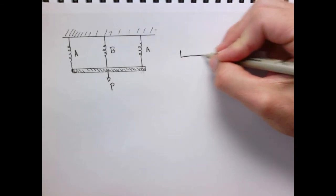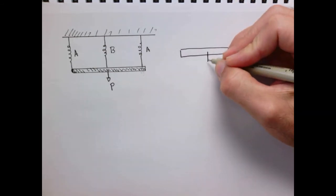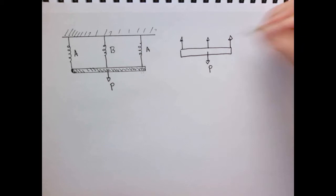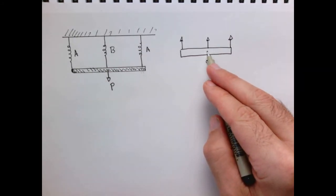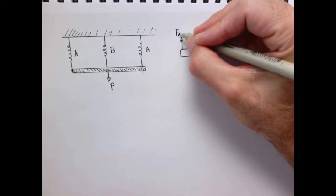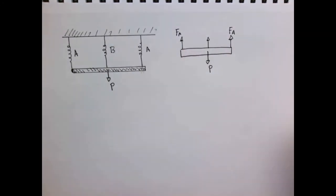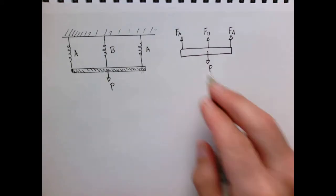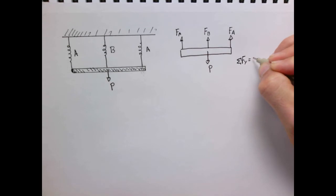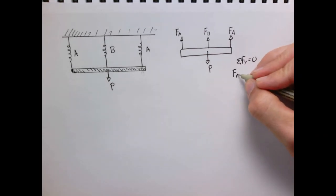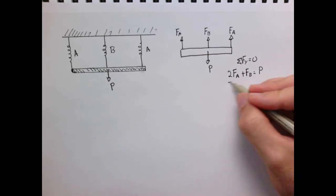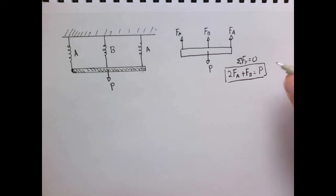Let's start by considering statics and the free body diagram of the plate. We have the load P pulling down, and three forces pulling upward. Summing moments about a point tells us the two outer forces are the same — so the forces in spring A are equal. We'll have F_A pulling up at each end and F_B pulling up in the middle. Summing forces in the y-direction gives us: 2·F_A + F_B = P.